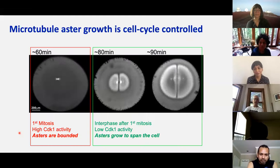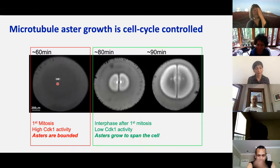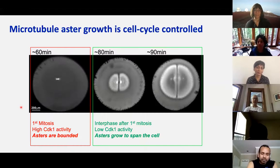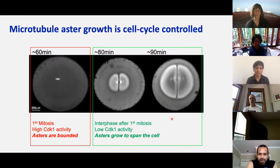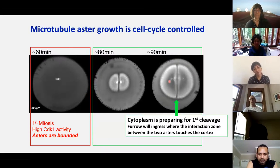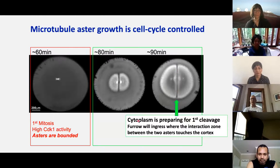The growth of these asters in frog eggs is controlled by the cell cycle oscillator and the CDK1 kinase — the master kinase that turns on mitosis. In mitosis, when CDK1 is high, the asters are bounded; they don't get any longer than one microtubule length, about 30 to 60 microns, small compared to the egg. But when the egg goes into interphase, these asters can grow out. They have to grow out to span the egg in order to position the nuclei. The cleavage furrow is going to be positioned by the gap between these asters, where this gap touches the plasma membrane is where the cleavage furrow will come in.